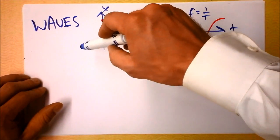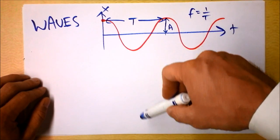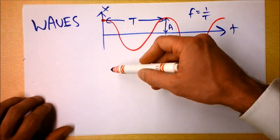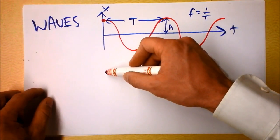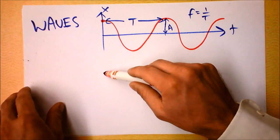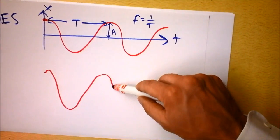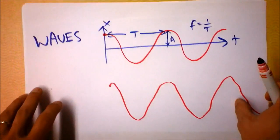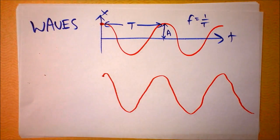What if I attached a marker to a pendulum? That marker would go back and forth. Imagine what would happen if I took a marker, let it oscillate, and at the same time slid the paper to the left. It does kind of look like an actual sine wave in space.